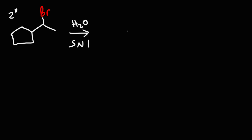In the SN1 reaction, the first step is that the leaving group is going to leave, and we're going to get a secondary carbocation intermediate. Now, will the structure rearrange? Can we form a more stable carbocation intermediate through rearrangement?